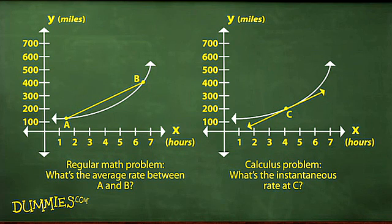While both problems determine slope, the second one gives the single point on the curve that is the instantaneous rate in miles per hour at the point of c. For that, you need to go beyond algebra to calculus to get the answer.